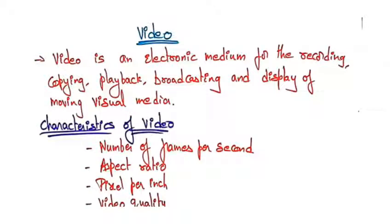Video is an electronic medium for the recording, copying, playback, broadcasting, and display of moving visual media. Characteristics of video include number of frames per second, aspect ratio, pixels per inch, and video quality.